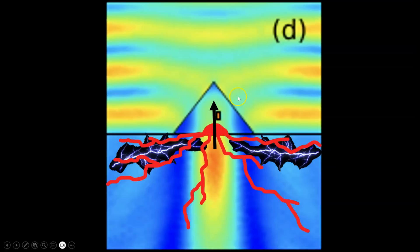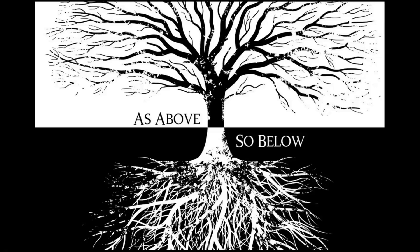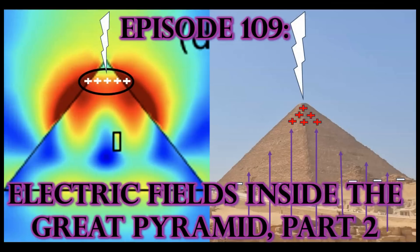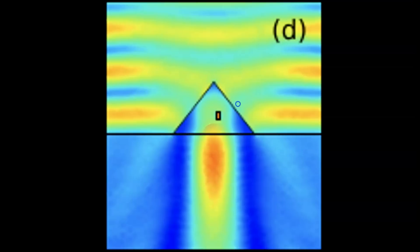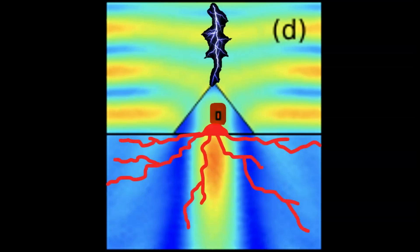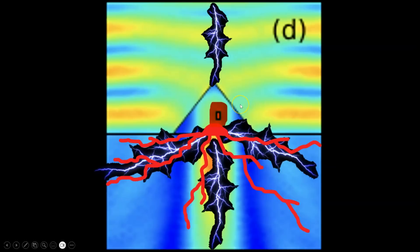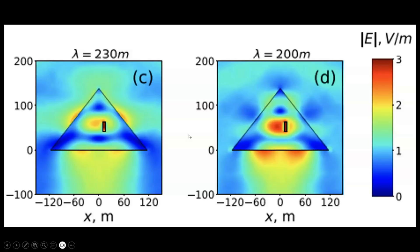Remember the hermetic axiom: as above, so below. The dielectric polarization and electric field concentration at the top of the Great Pyramid, as explained in Episode 109, created a target for negatively charged cloud-to-ground lightning. The Great Pyramid, with its iron core and vein network, was specifically designed not only to distribute that high-voltage electric current through these conductive mineral veins across the Giza Plateau, but also to concentrate these electric currents to induce electric fields directly in the area surrounding the King's Chamber.